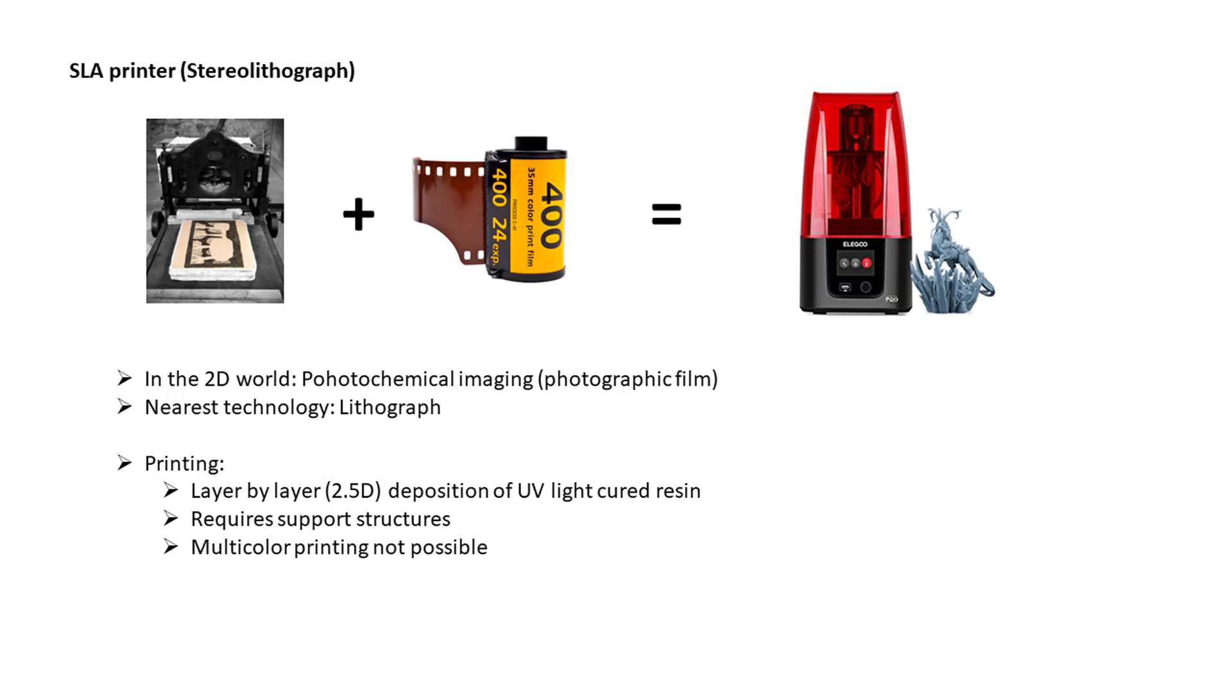The second common technology in the consumer world is SLA. This stands for stereolithograph. This name was chosen because it looks a little bit like the print platform is pushing down like on a lithograph stone. The process of curing the resin is photochemical, so it's also a little bit relative to a photofilm. Material is applied layer by layer, 2.5D. Overhangs require supports and no multi-colored prints are possible.